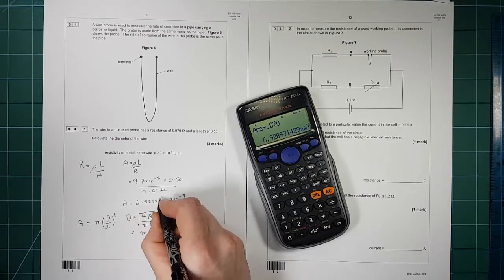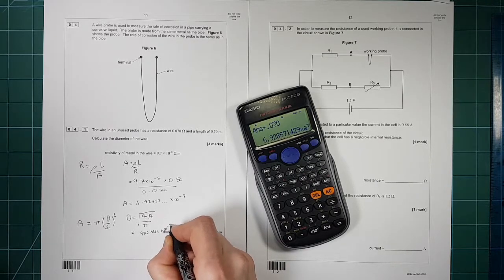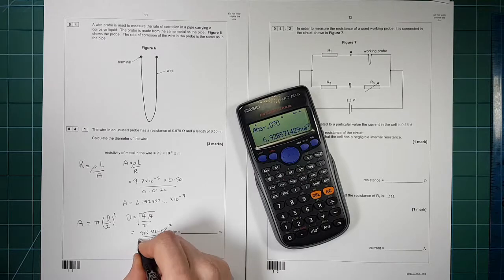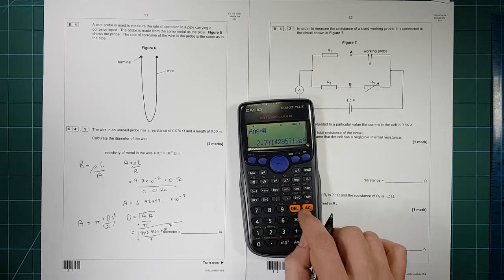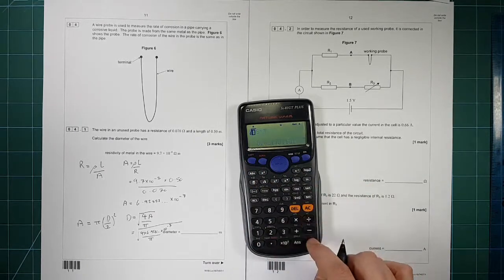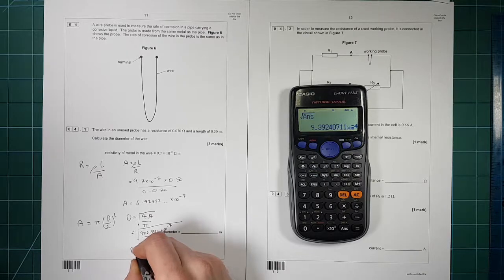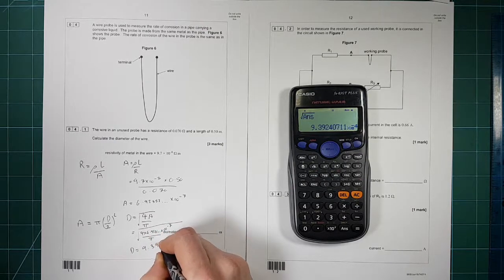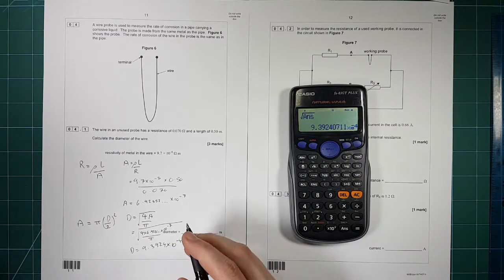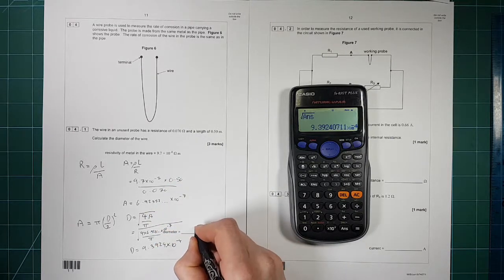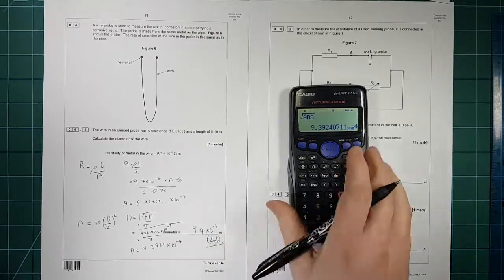So it's 4 times by 6.928 times 10 to the minus 7, divided by pi, all square rooted. So times that by 4, divide it by pi, and square root the answer gives us the diameter is equal to 9.3924 times 10 to the minus 4. Sig figs, 2 sig figs we want it to. So it's 9.4 times 10 to the minus 4, 2SF.